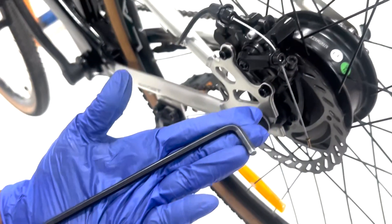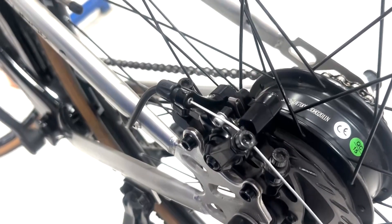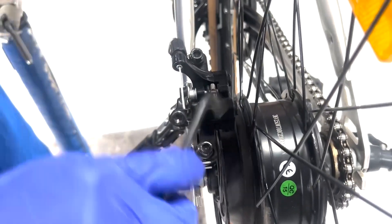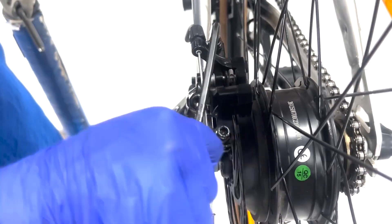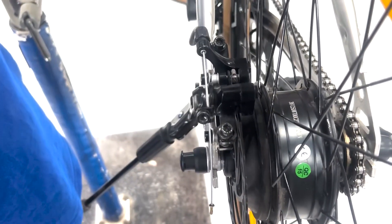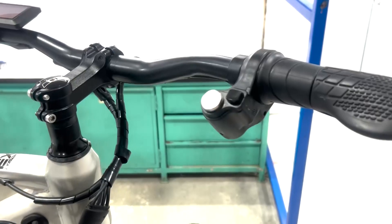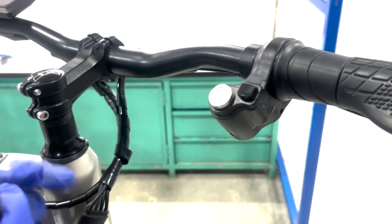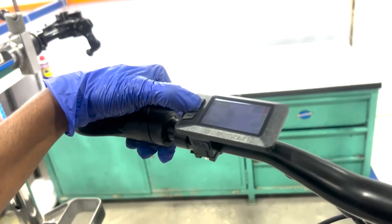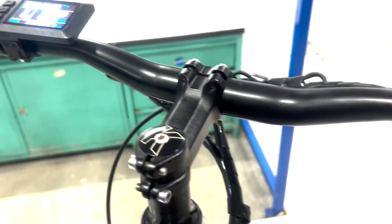Lastly, adjust the rear brakes using a 5mm Allen key. Finally, switch on the key and power on the e-bike and test all functions, including the display, throttle, brake levers, pedal assist sensor (PAS), and lights, to ensure everything is working correctly.